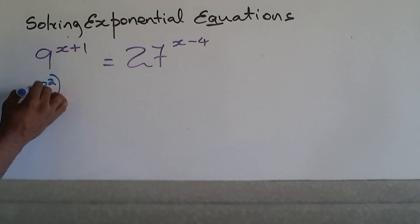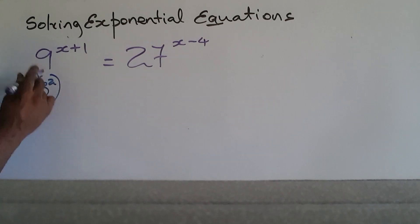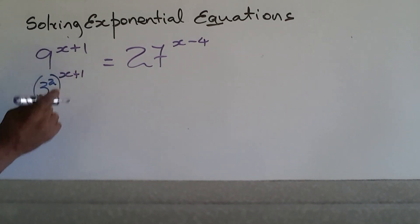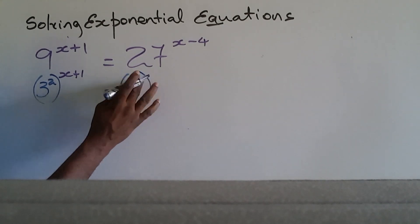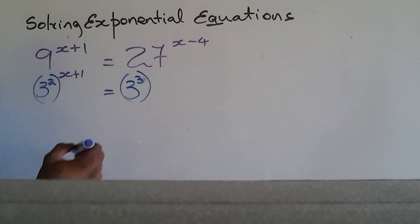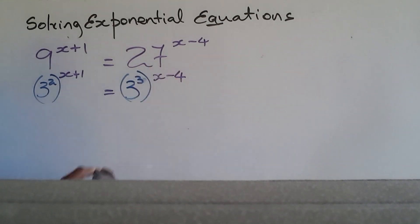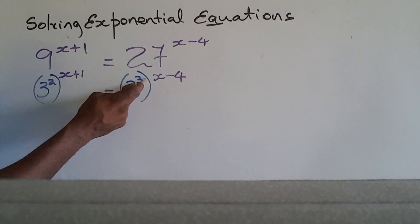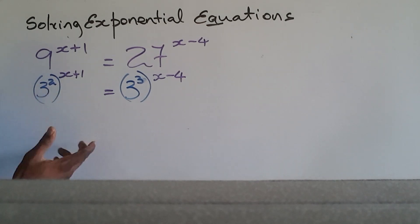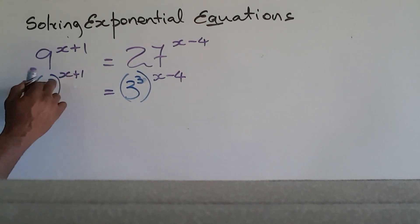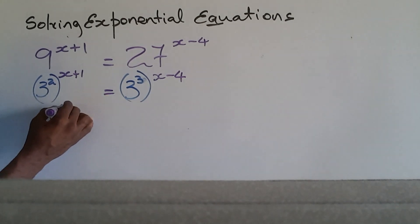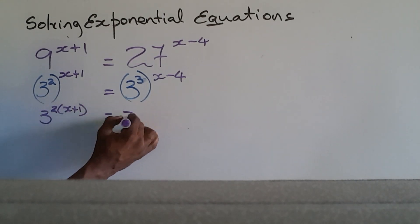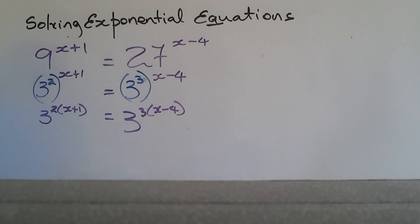So I can substitute: 9 is 3 squared, with the X plus 1 still present. And 27 is 3 raised to the 3rd, with the X minus 4 still on that side. Now I employ a rule of indices: when a power is raised to another power, the exponents multiply. So I really have 3 squared times X plus 1 on the left, equal to 3 cubed times X minus 4 on the right.